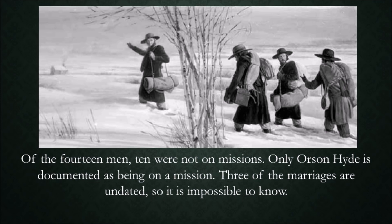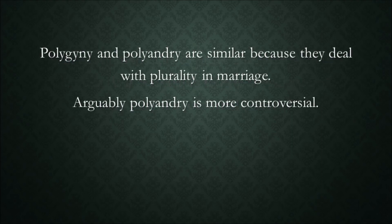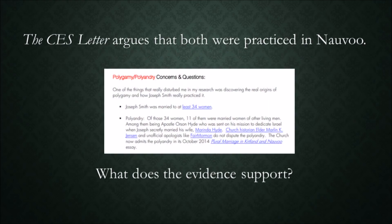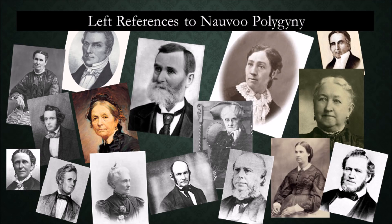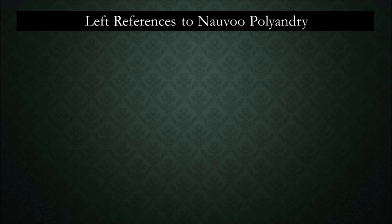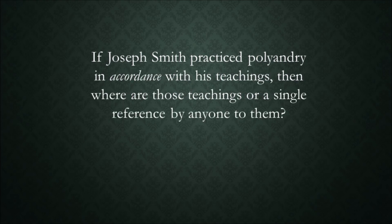Three of the marriages are undated, so it is impossible to know in their cases. While it is impossible to prove something did not happen, is it reasonable to expect evidence of polyandry if it occurred secretly? Polygyny and polyandry are similar because they deal with plurality and marriage. Arguably, polyandry is more controversial. The CES Letter argues that both were practiced in Nauvoo. These are individuals who left references to Nauvoo polygyny, and here are individuals who left references to Nauvoo polyandry. An important question is: if Joseph Smith practiced polyandry, was it in accordance with his teachings or in contradiction to them? If Joseph Smith practiced polyandry in accordance with his teachings, then where are those teachings, or even a single reference to any of them? Brigham Young taught in 1852 that polyandry is not known to the law.